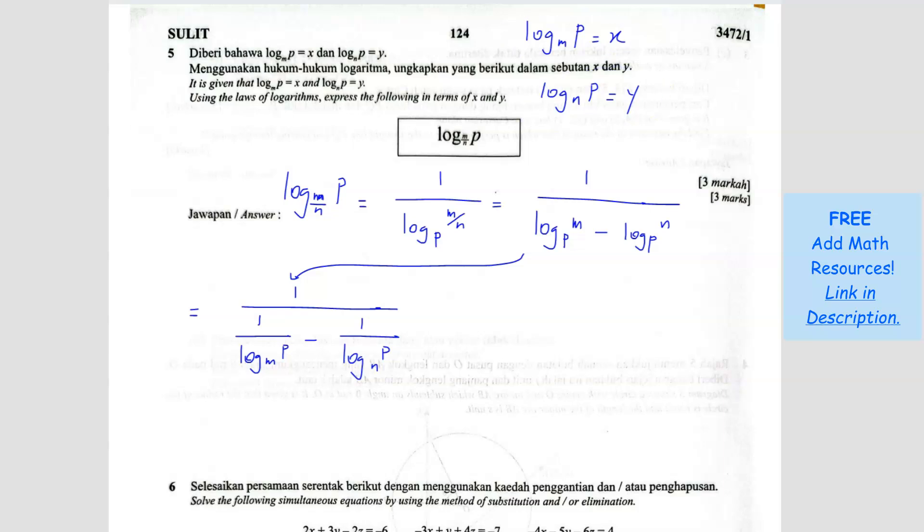So now it becomes 1 over, so now this one is identical, log P base M is what? X. We got it here. So it becomes 1 over X minus 1 over log P base N is Y, so 1 over Y.